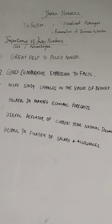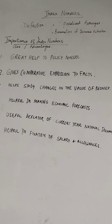Based on index numbers, governments and businesses make appropriate policies. Regarding fixation of salary and allowances, index numbers help employers decide how much dearness allowance has to be given on the basis of the cost of living index. Both government and private businesses need to know changes in the price level so that they can make necessary adjustments in salaries.